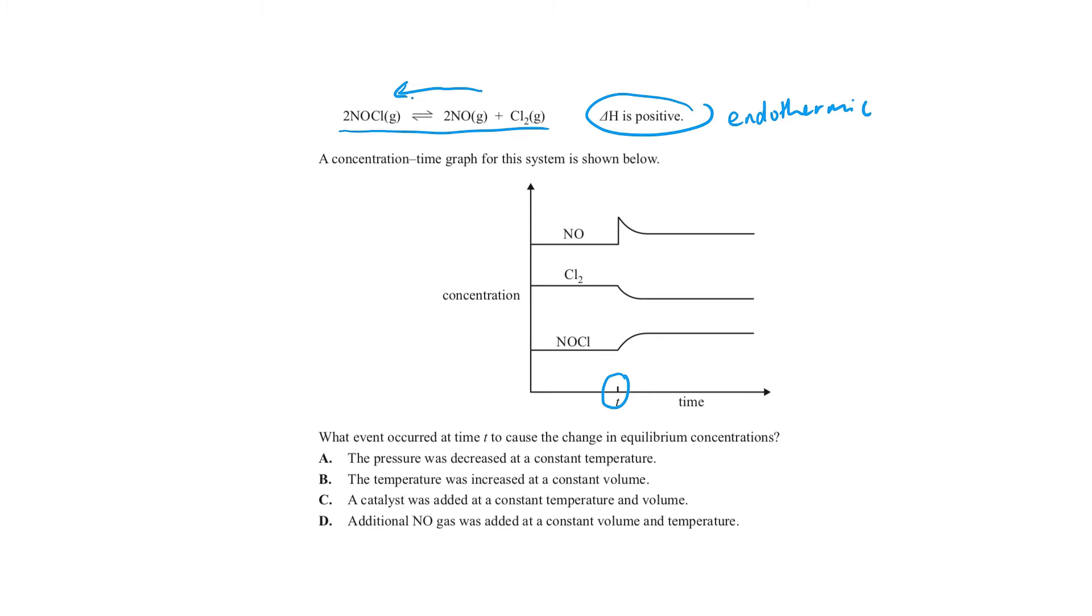This means that our NOCl would slowly increase, which is correct. Our chlorine would slowly decrease, which is correct. And so should our nitric oxide, which is incorrect because it has rapidly increased. So A is wrong.